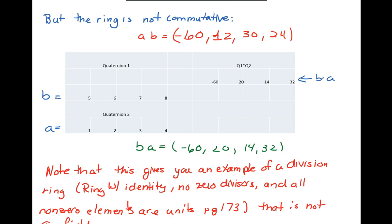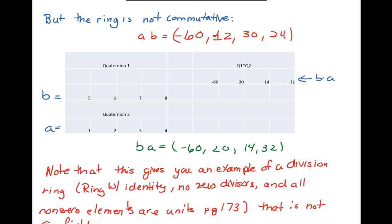So this ring is not commutative. This example of a ring is a division ring. So in your book on page 173, it's a ring with an identity, no zero divisors, and all the non-zero elements are units. But it's not a field. And it's not a field because we don't satisfy commutativity.